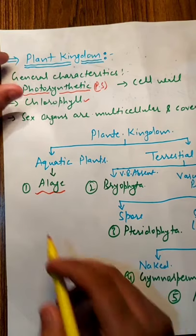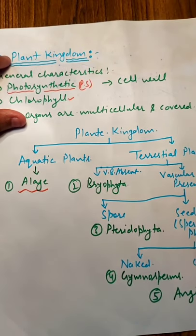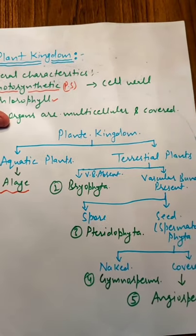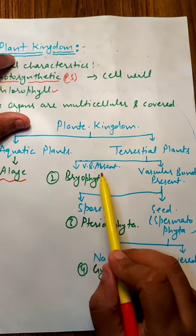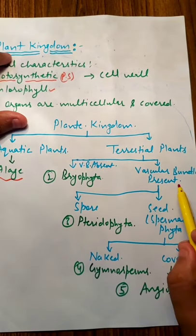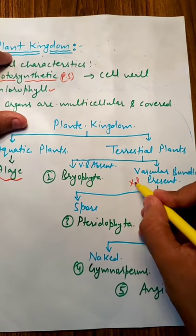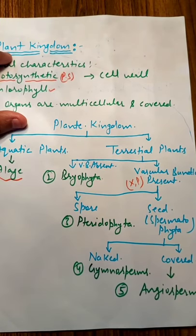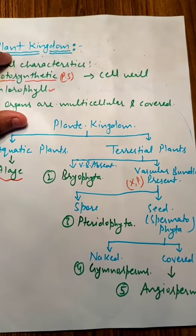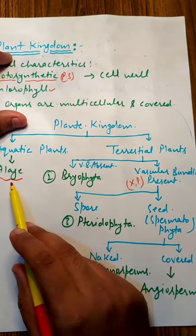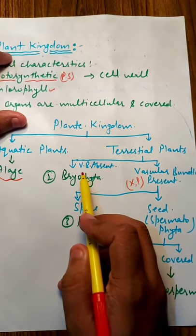Terrestrial plants can be divided into two different classes: first, where vascular bundle is absent, and second, where vascular bundle is present. Vascular bundles are xylem and phloem. So if conducting tissue is present, they come in one category, and if absent, in another. First division is algae. Second is bryophyta, which does not have vascular bundles.